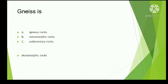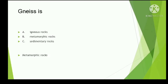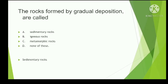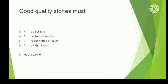Gneiss is an igneous, metamorphic, or sedimentary rock? It is a metamorphic rock, converted from granite to gneiss after metamorphism. The rock formed by gradual deposition — is it called sedimentary rock, igneous rock, metamorphic rock, or none of these?